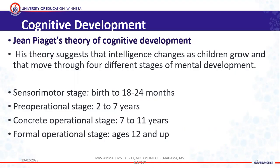During our last lecture, we couldn't finish our discussion on physical and cognitive developments. We had finished with the physical developments, but we couldn't do the cognitive development. This video lecture is supposed to compensate for that. We'll be looking at three theories or three aspects of cognitive development: the theory by Piaget, Vygotsky, and then we'll add intelligence.